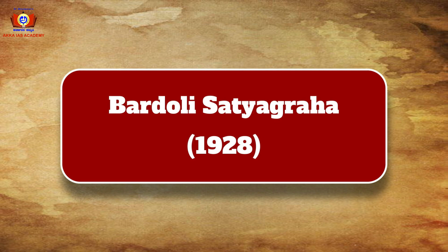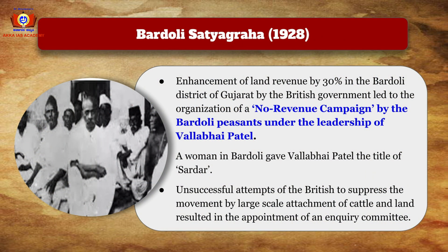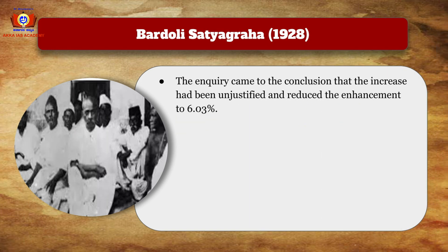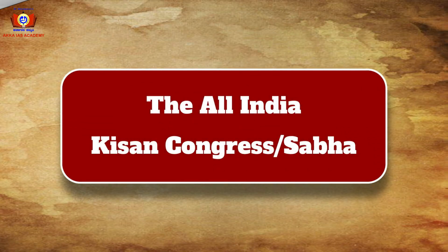The enhancement of land revenue by 30% in Bardoli district of Gujarat by the British government led to the organization of a no-revenue campaign by Bardoli peasants under the leadership of Vallabhbhai Patel. A woman in Bardoli gave Patel the title of 'Sardar.' Unsuccessful attempts by the British to suppress the movement through large-scale attachment of cattle and land resulted in the appointment of an inquiry committee. The Bardoli Satyagraha of 1928 concluded that the increase had been unjustified, and the enhancement was reduced to 6.03%.